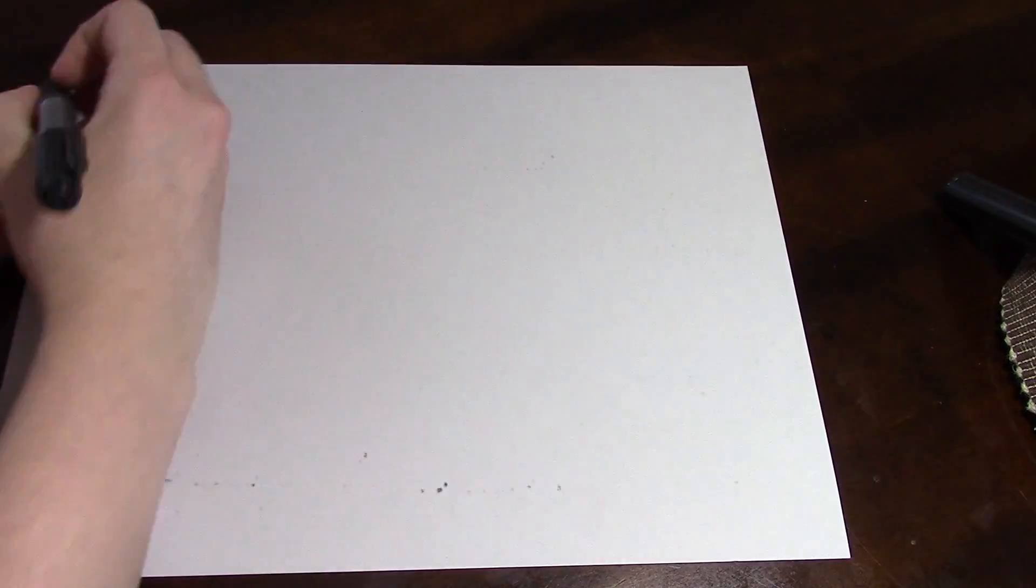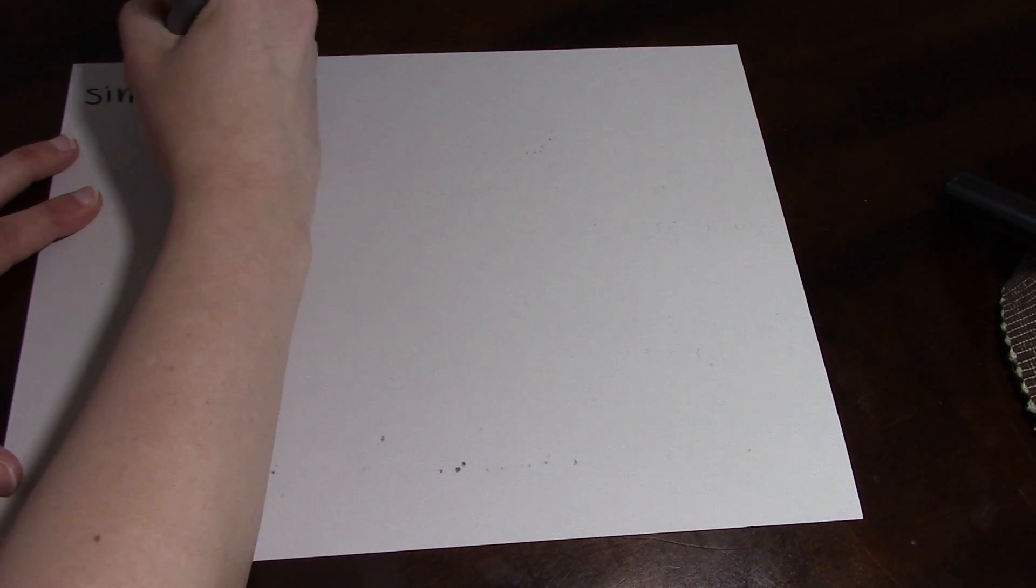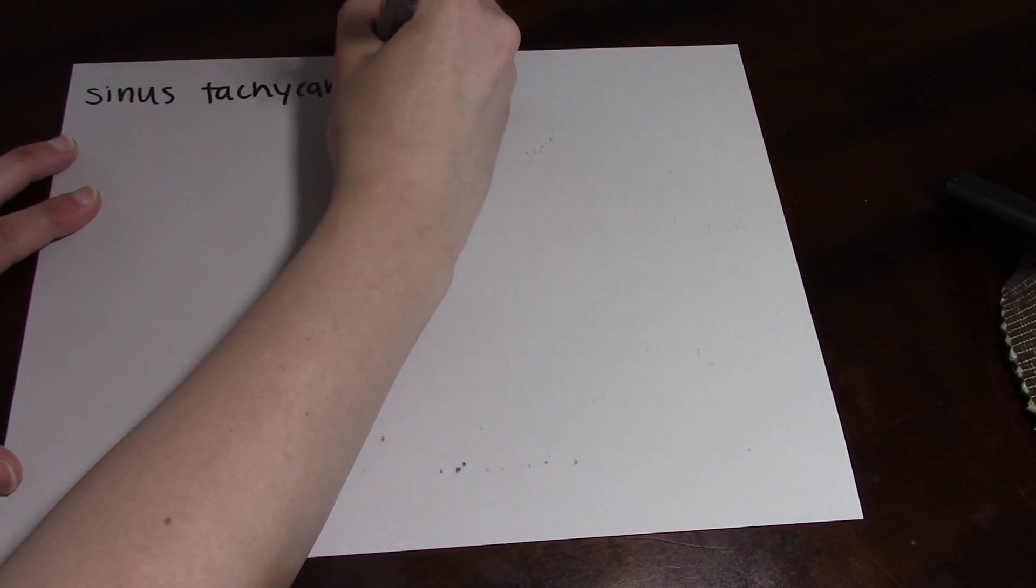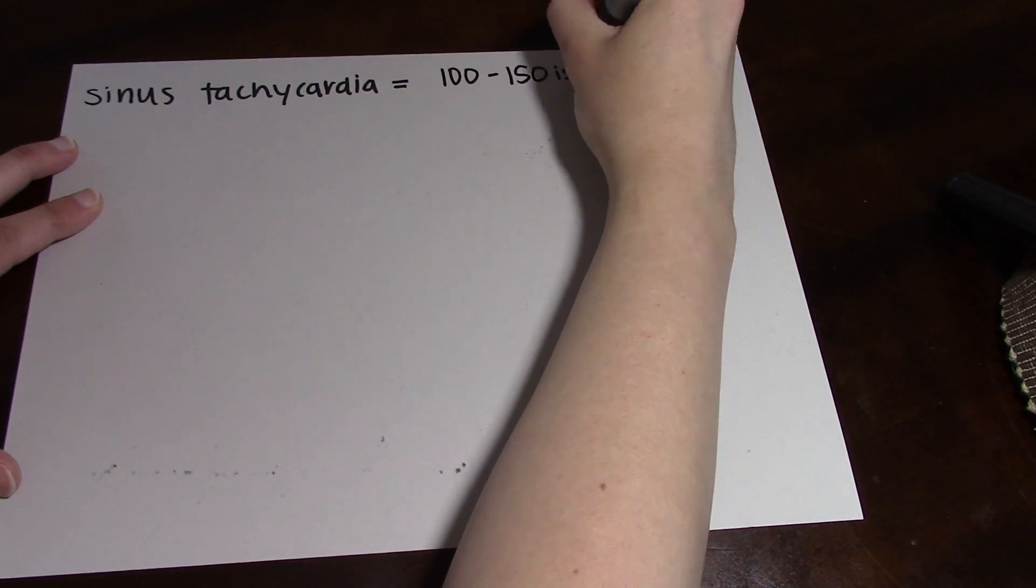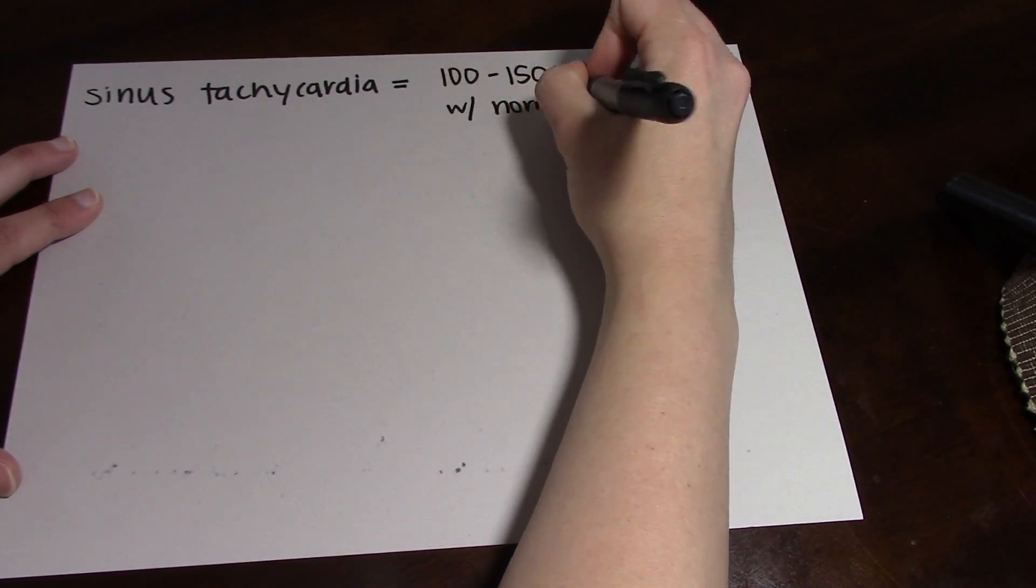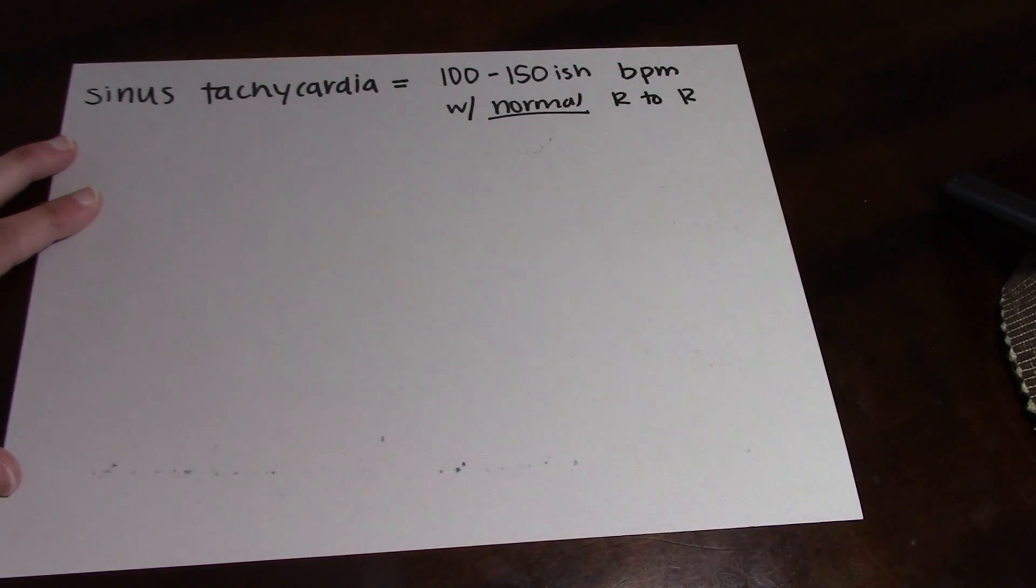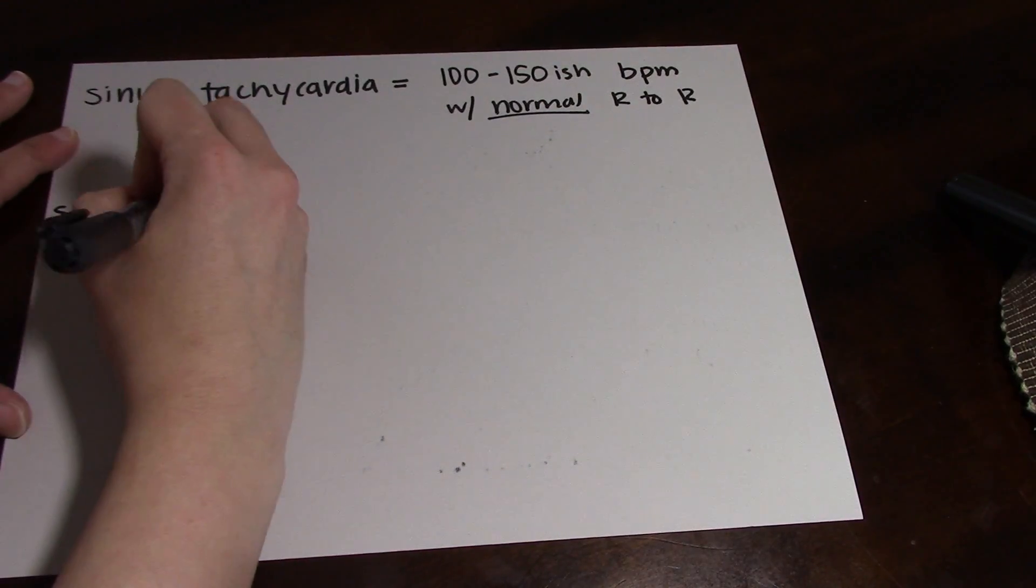The next rhythm is sinus tachycardia, and in this rhythm you will have about 100 to 150 ish beats per minute, so it is faster than sinus rhythm. Your R to R's will still be even and normal, and you will still have one P wave for every QRS.